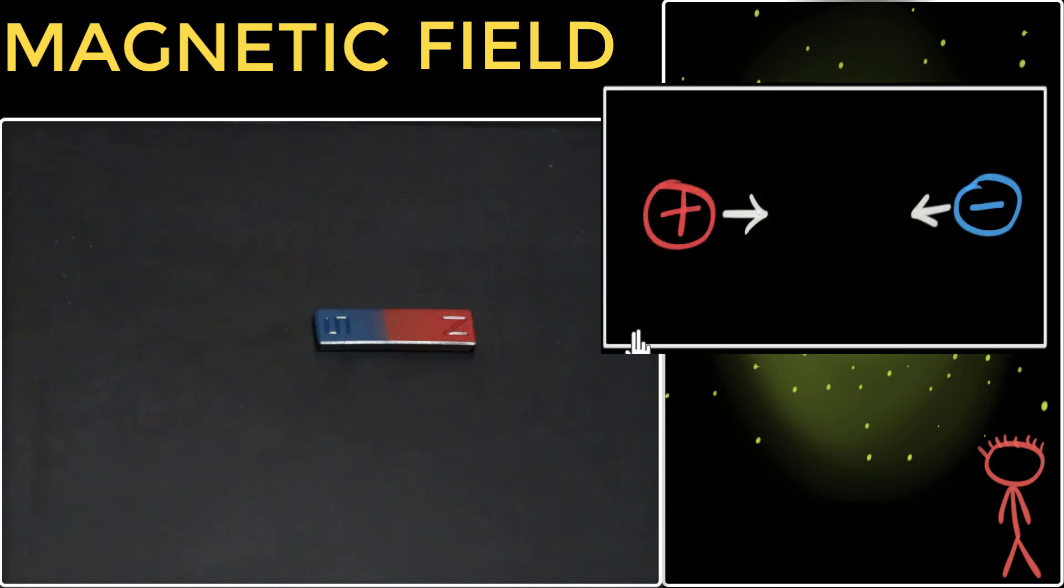For example, how do these charges pull and push each other over a distance? Well, we can say the charges produce an influence around themselves, making their presence felt. This influence is called the electric field. It's called electric field because it only affects electric charges.